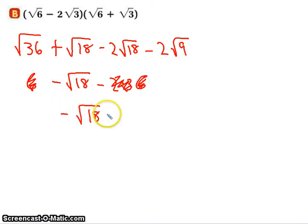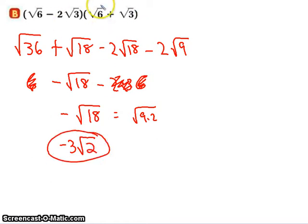Well, this can still be simplified. This is equal to 9 times 2. So we get negative 3 root 2. So all of that is represented by that. Go back and watch it again if you need to.